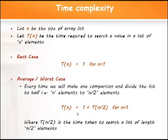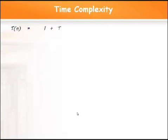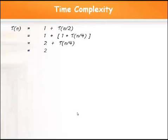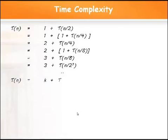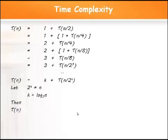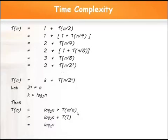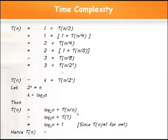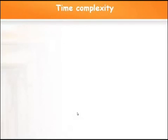Solving the recurrence T(N) = 1 + T(N/2): substituting T(N/2) gives 1 + 1 + T(N/4) = 2 + T(N/4). Re-substituting T(N/4) gives 3 + T(N/8). Generalizing, after K steps: K + T(N/2^K). Setting 2^K = N gives K = log₂N. Substituting back: T(N) = log₂N + T(1) = log₂N + 1. Hence the time complexity for worst and average case is O(log N).